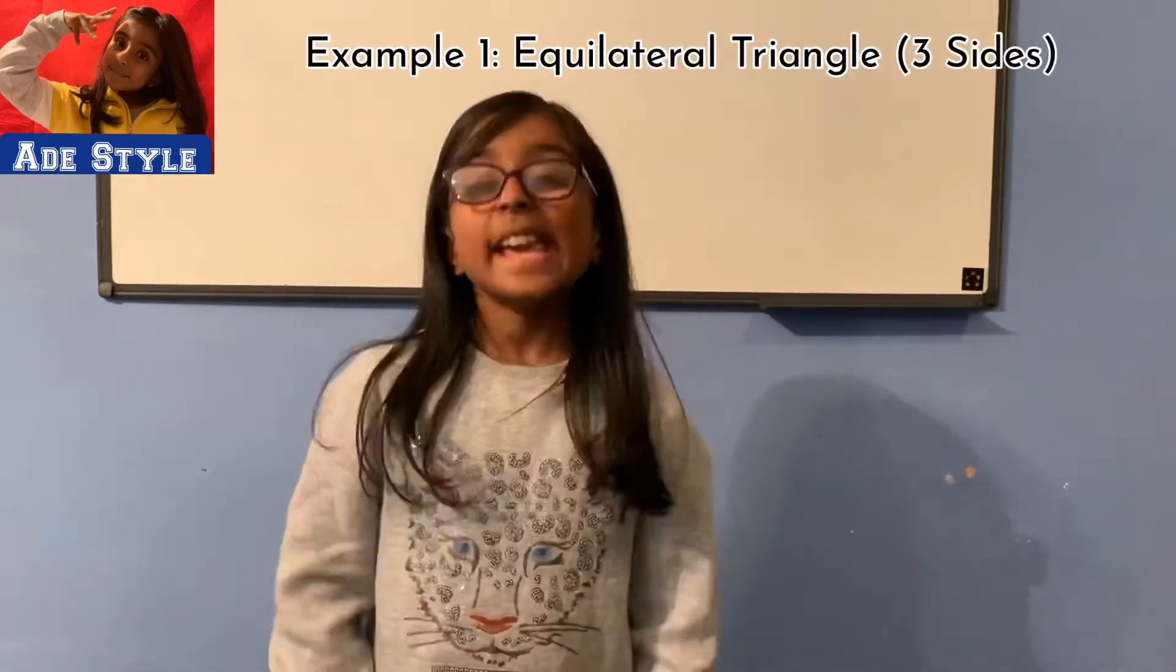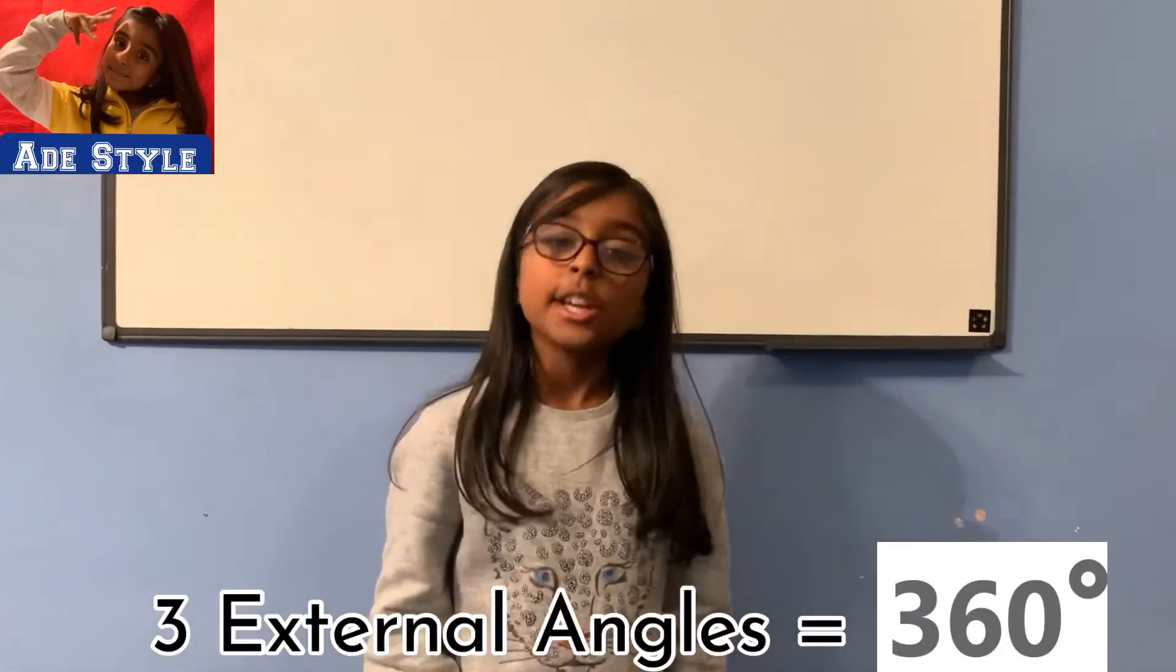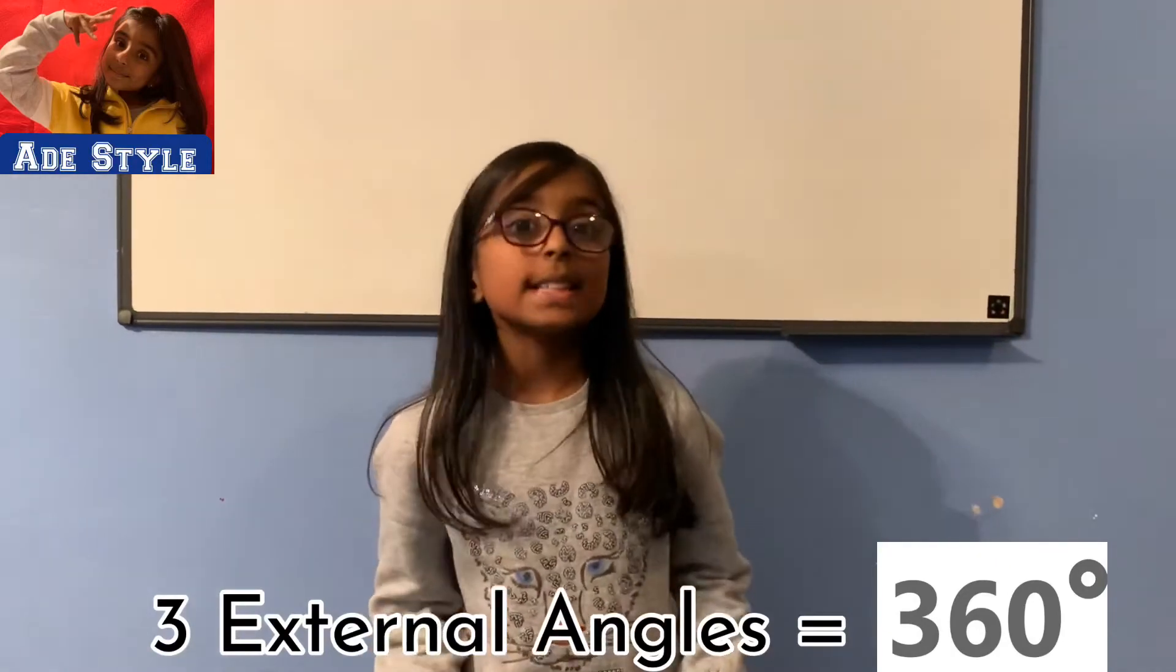We will look at some examples of regular polygons. Example 1: equilateral triangle, three sides. It has three external angles which equals 360 degrees.